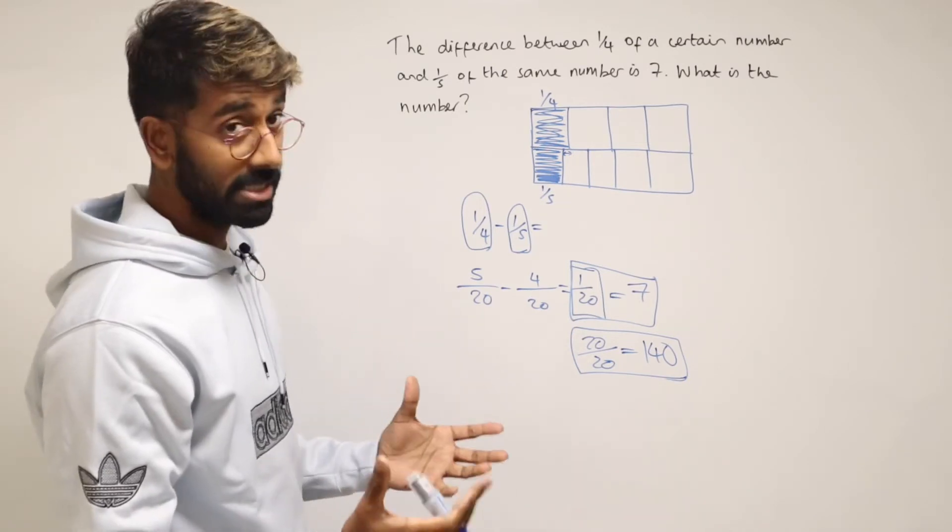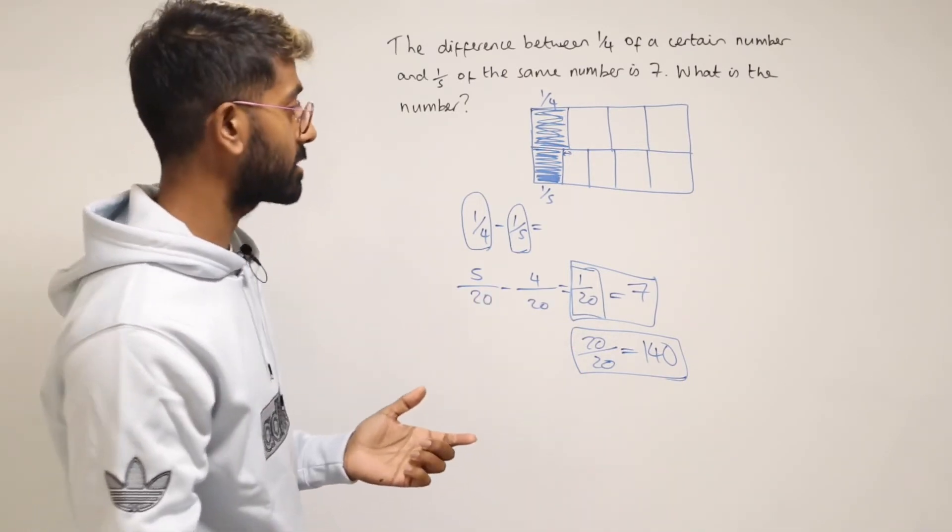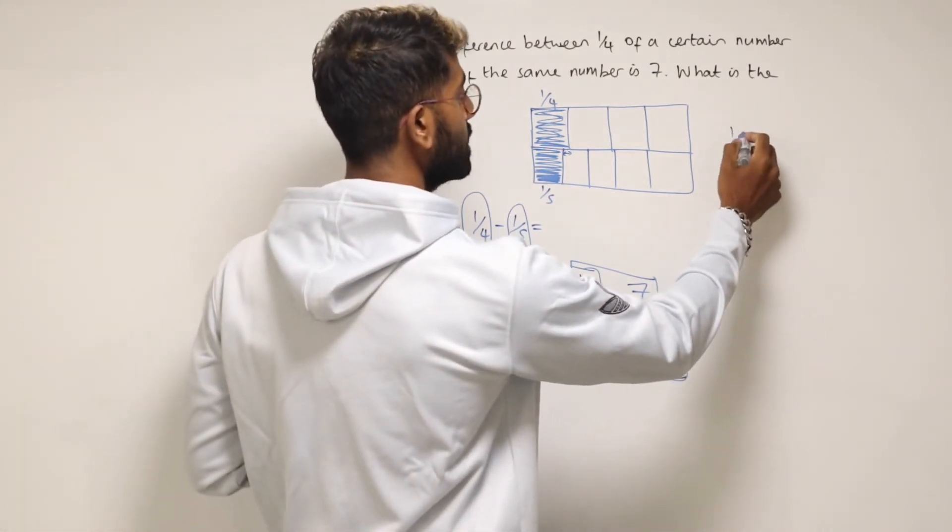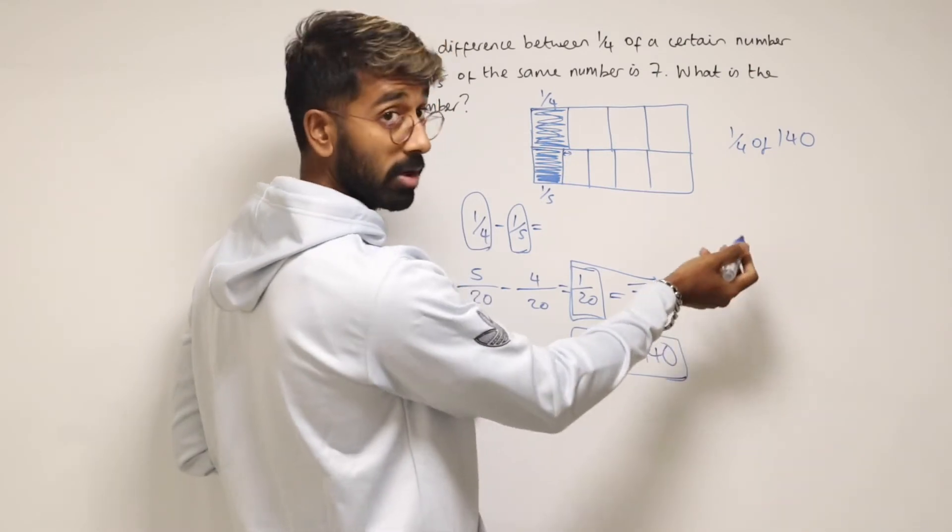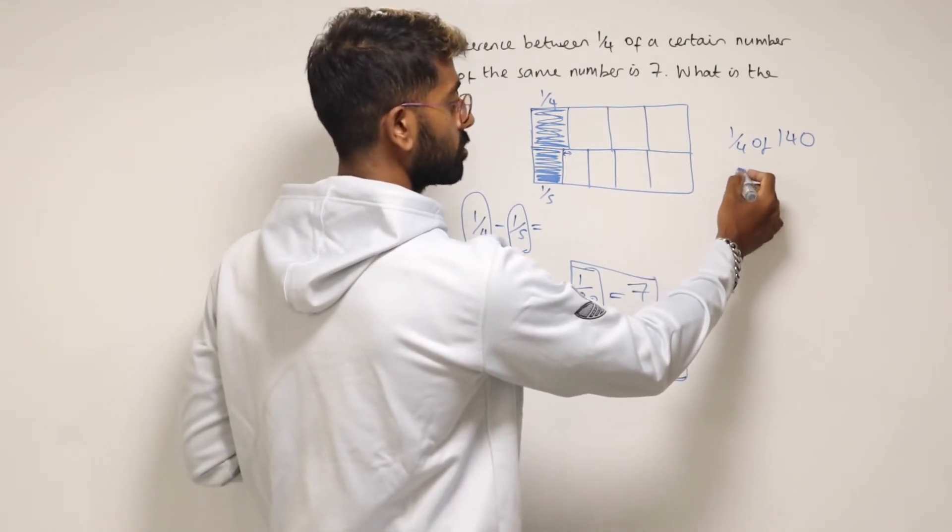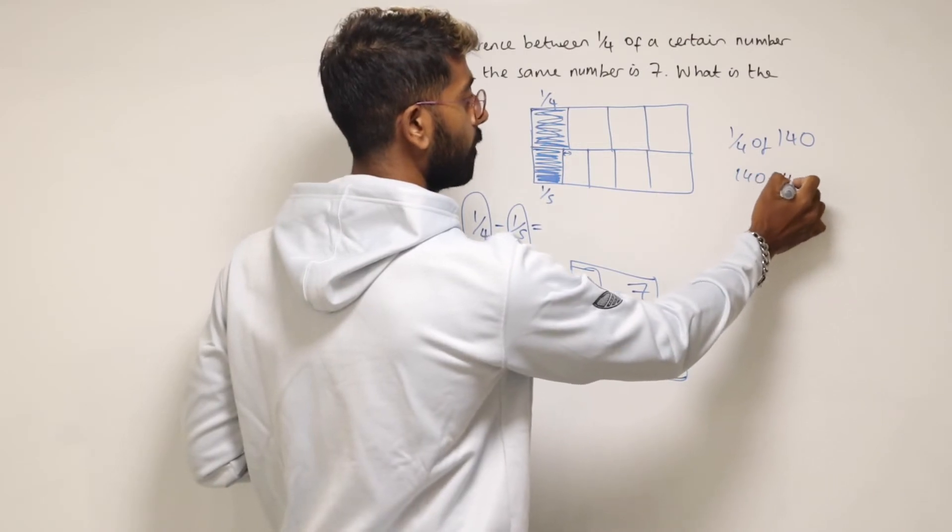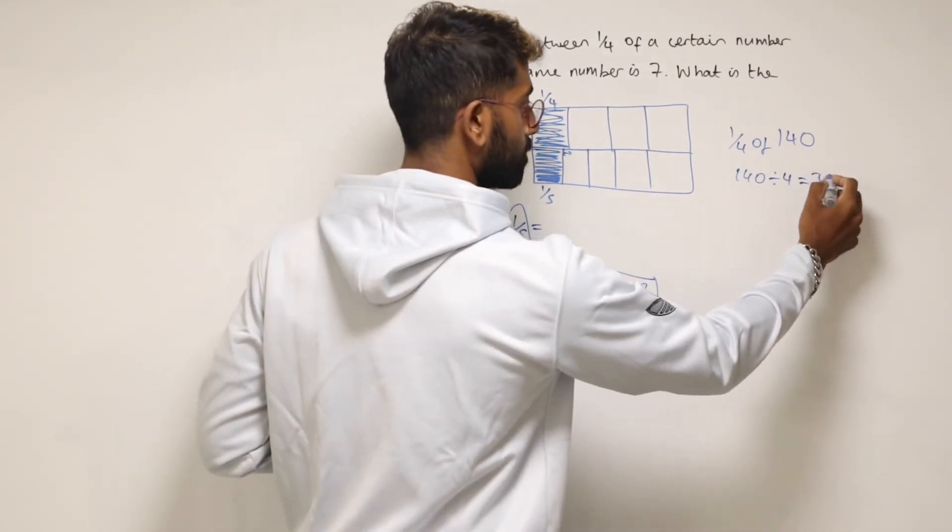So that number, the missing number, the whole number there must be a hundred and forty. And what we can do is now check it. So what is a quarter of a hundred and forty? So what we need to do there is do 140 divided by 4. So to do that, 140 divided by 4, we could divide it by 2, which is 70, divide it by 2 again, 35.